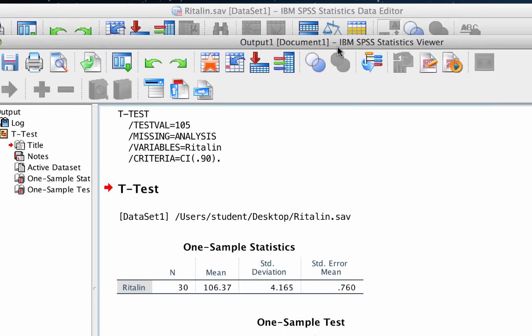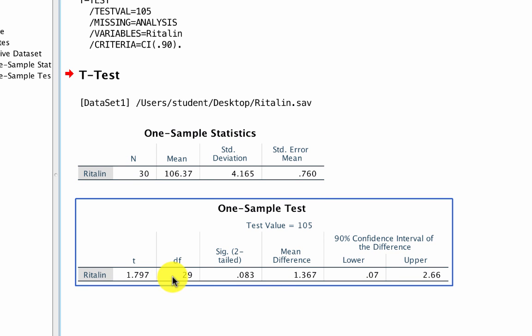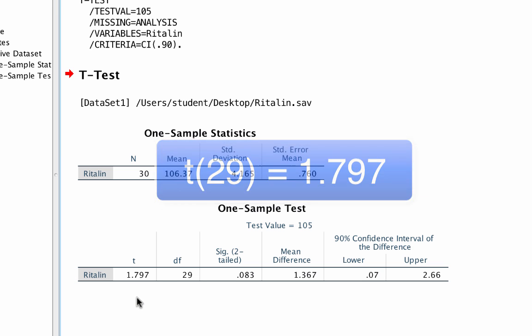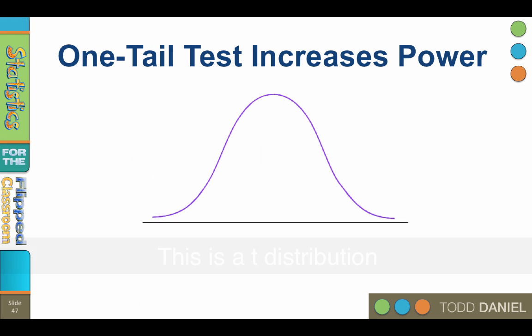In the output window, we see the descriptive statistics. We see the t-value and the degrees of freedom. All of these are useful, except this significance value. It is for a two-tailed test. We'll fix that in a minute. For now, let's see the difference in power between a one-tailed test and a two-tailed test. Remember that our t-value is 1.797.